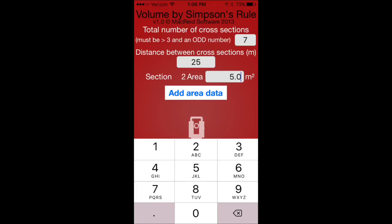Number one is 3.6, add area data. Two is 5.0, add area data. Three is 6.5, add area data. Four is 5.5, add area data. Five is 7.3, add area data. Six is 6.0, add area data. And seven is 4.0, add area data.